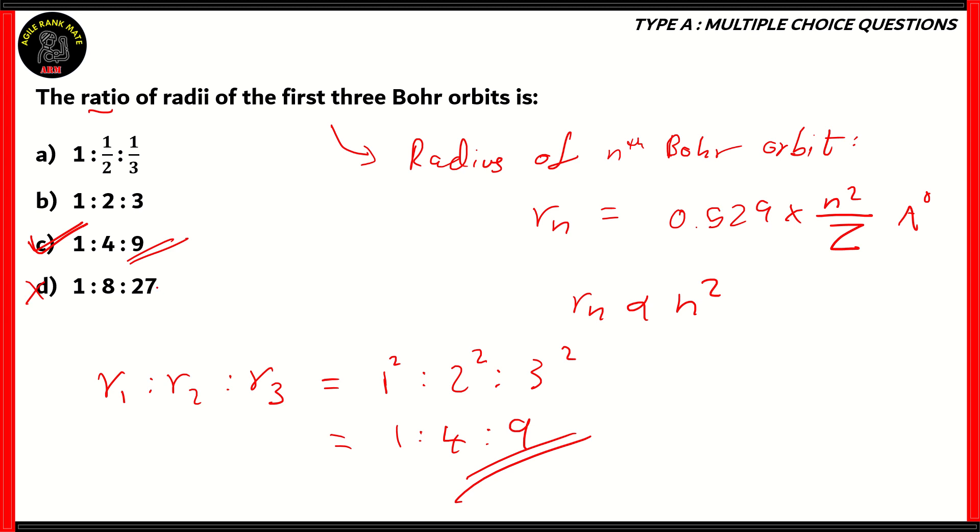Option d is for cubes, option b is when Rn is proportional to n, which is wrong, and option a is when the radius is inversely proportional to the orbit number, which is also wrong. Therefore, options a, b, and d are incorrect. The correct option is option c, the radius of the Bohr orbit is directly proportional to the square of the orbit number.